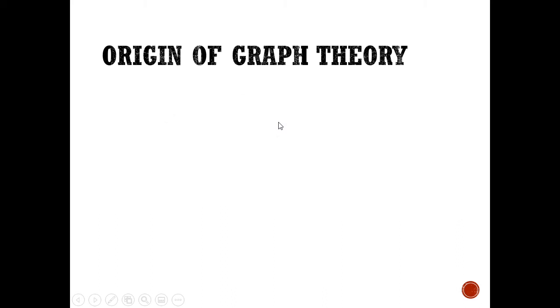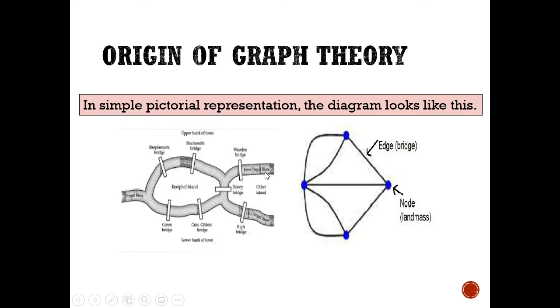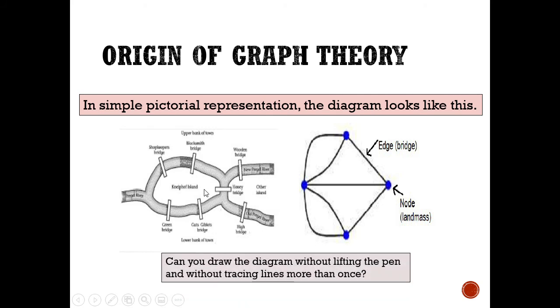So completing all possible relations between two land masses, we would end up with this diagram. Now according to Euler, it is not possible to take a walk through town, crossing each of the seven bridges exactly once, and ending up where you started.